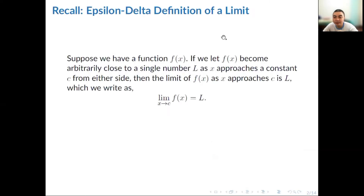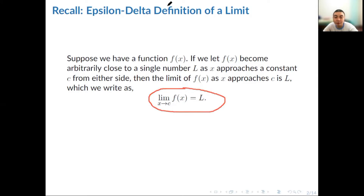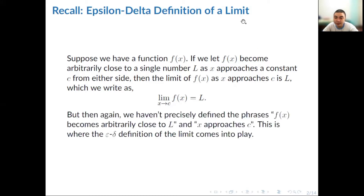So recall the informal definition of limit. Suppose we have a function f of x. If we let this function become arbitrarily close to a single number, say l, as x approaches a constant c from either side, then the limit of f of x as x approaches c is l. But we still don't have a precise definition for the phrases 'f of x becomes arbitrarily close to l' and 'x approaches c.'